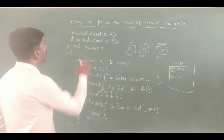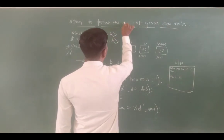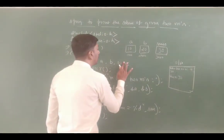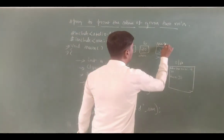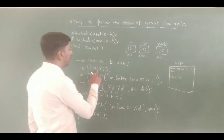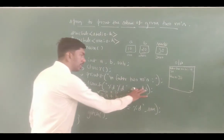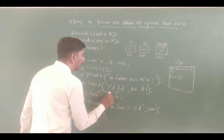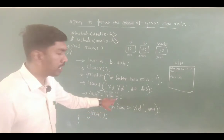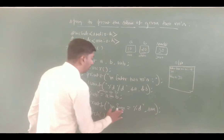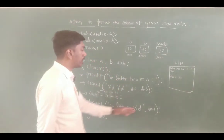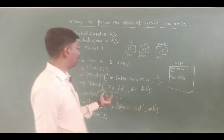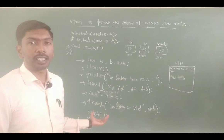Now the next program is subtraction. Same program structure: #include stdio.h, #include conio.h, void main. Here declare int a, b and a variable called sub. Next, clrscr(), printf "\nEnter two numbers", scanf same. Then sub = a - b — instead of a + b, use a - b. So 10 minus 20 gives -10. Then printf subtraction equals %d, sub — subtraction equals -10.